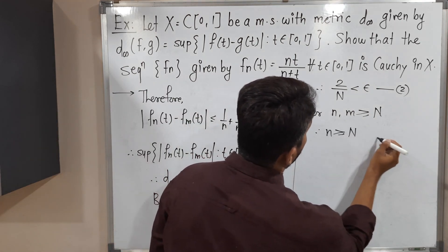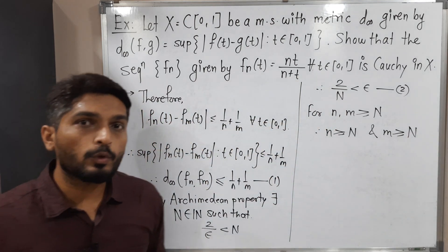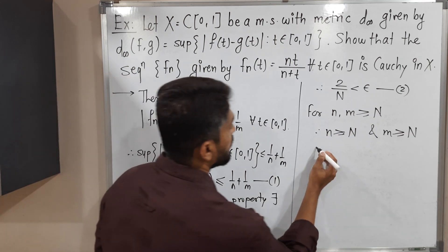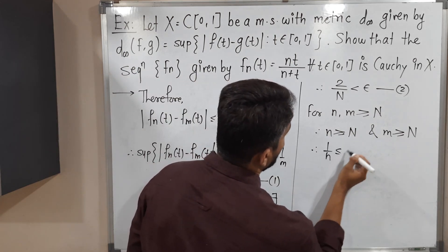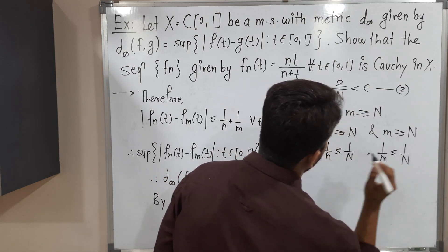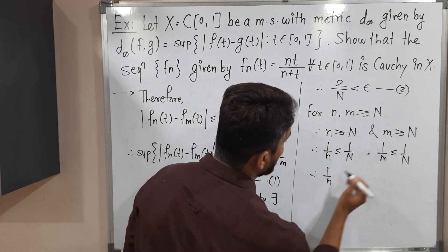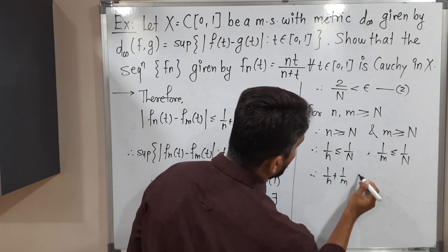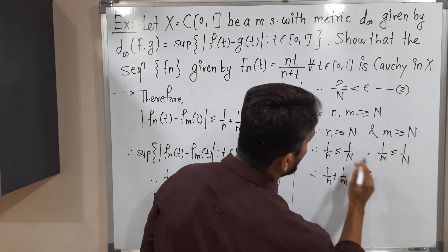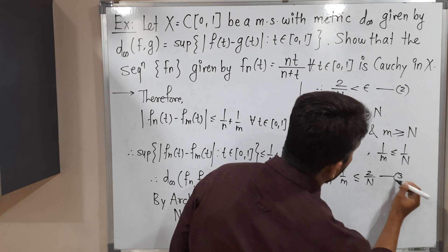Let us take reciprocals of both sides — then the inequality will get changed. From n ≥ N and m ≥ N, taking reciprocals gives 1/n ≤ 1/N and 1/m ≤ 1/N. Let us add them: 1/n plus 1/m is less than or equal to 1/N plus 1/N, which equals 2/N. Let us call this inequality (3).